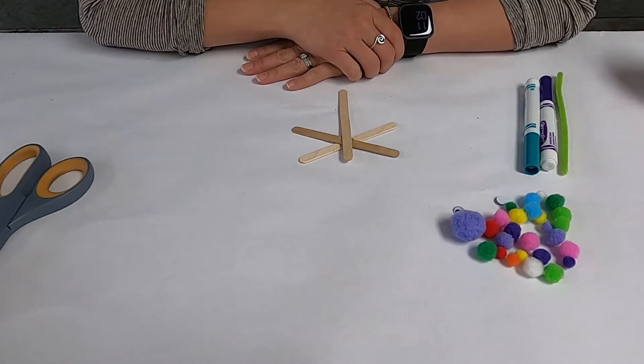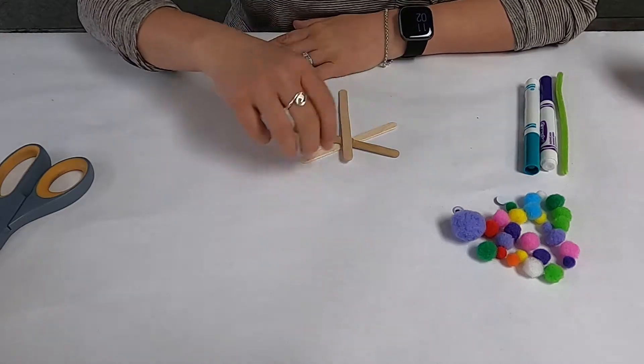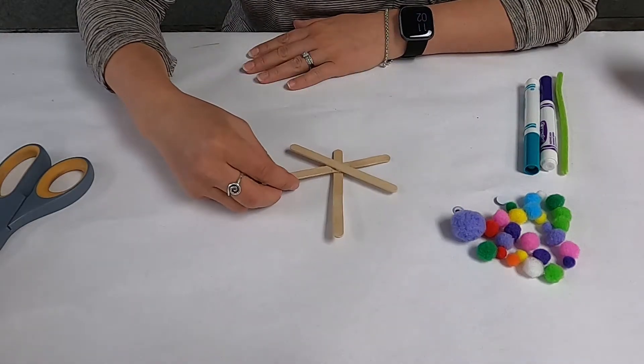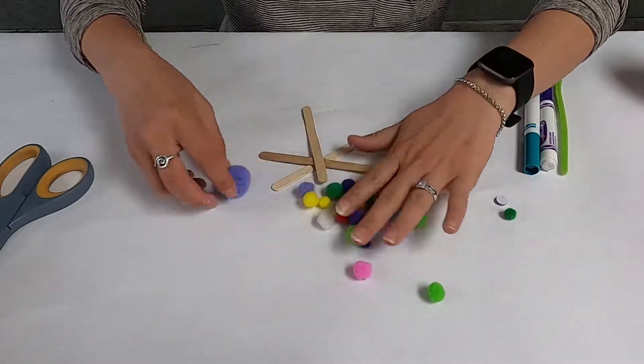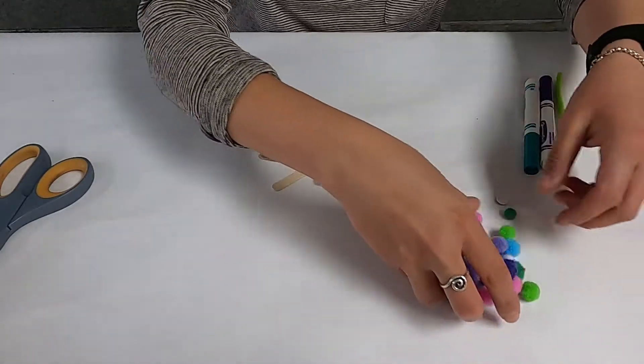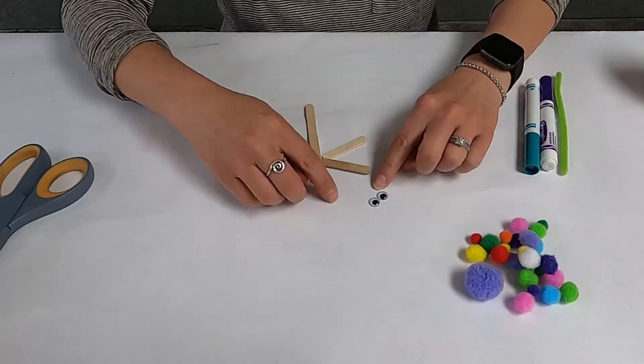So those are our two main things that we need: our three popsicle sticks. We need some pom-poms, these fun little poms in all different colors, and some googly eyes.